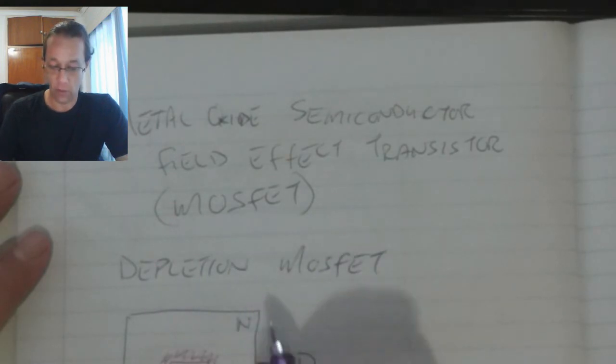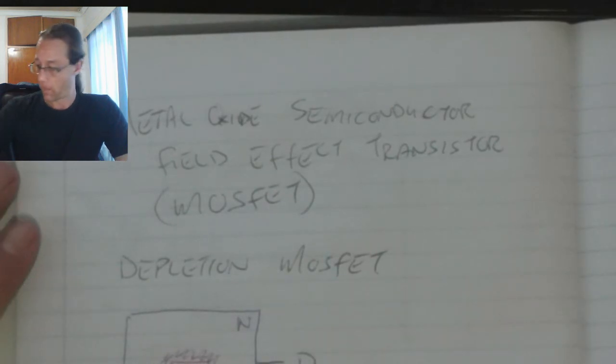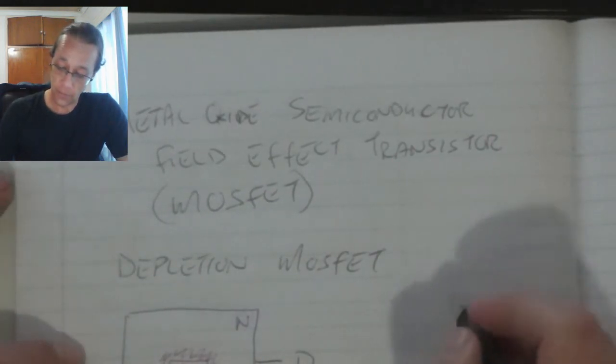It also comes in a P-channel type, where that'll be a P-type material and that'll be an N-type material. The symbols for the depletion MOSFET.